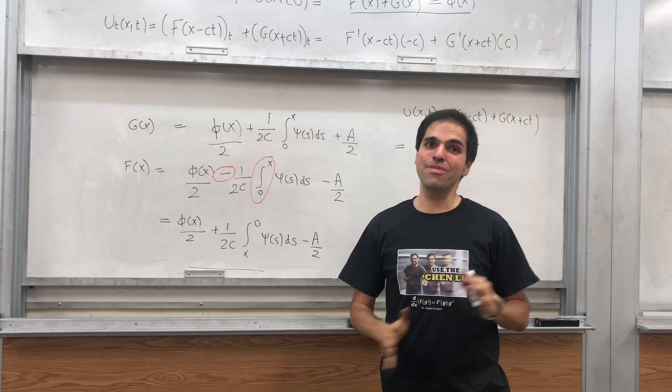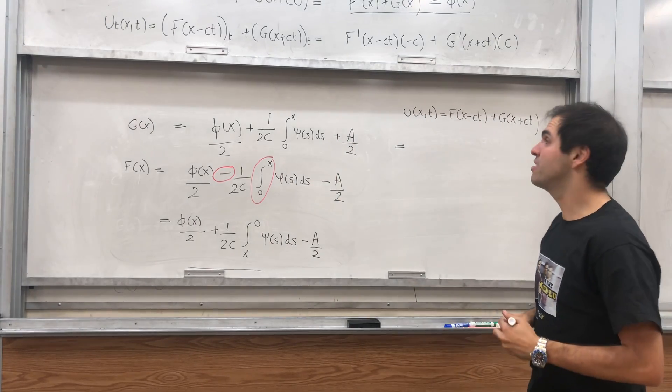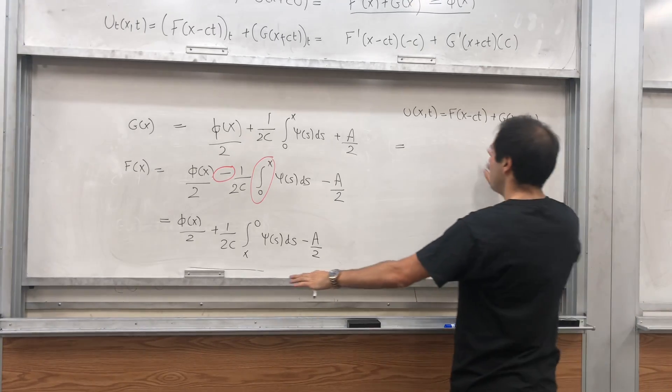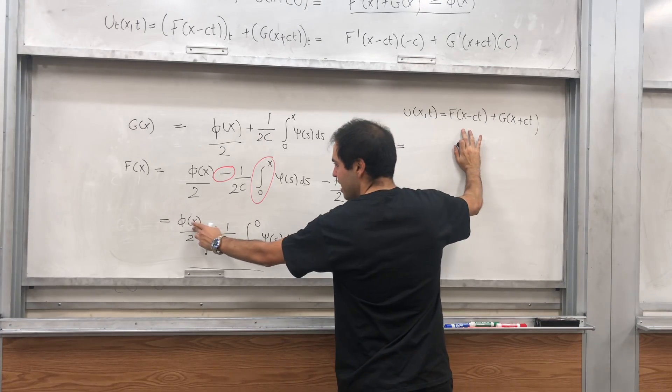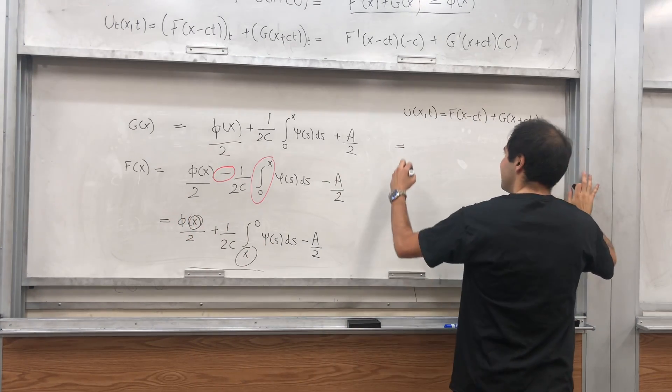Technically, we have this A over two, and we still haven't determined that, right? So that might be a problem, and think of this as being a criminal or something. We should be scared of that person. But, you'll see in a second, so what is F of x minus ct? In every instance of x here, you will replace it by x minus ct.